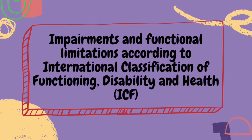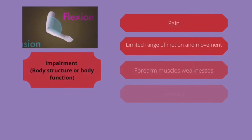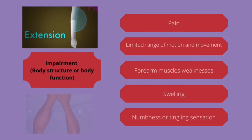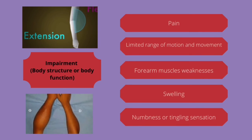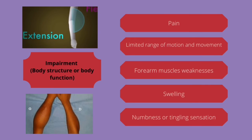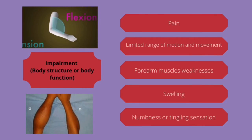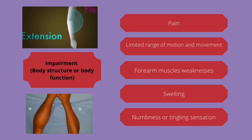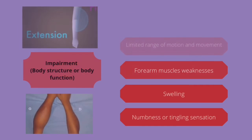For impairment and functional limitations according to the ICF framework, for both Galeazzi and Monteggia fractures, the impairments include pain, limited range of motion, forearm muscle weakness, swelling at the fractured part, and numbness or tingling sensation if nerve injury occurs.